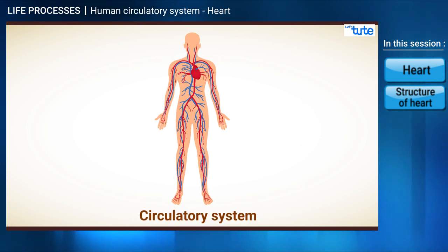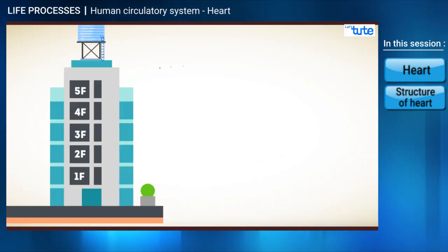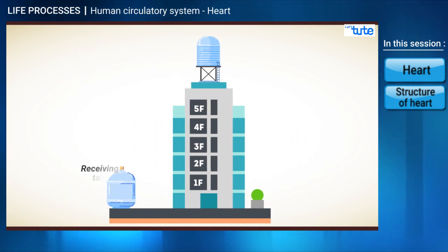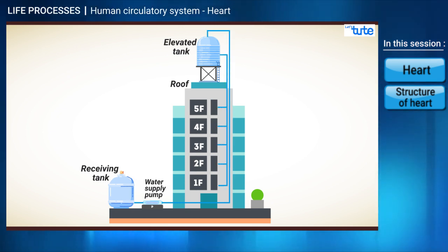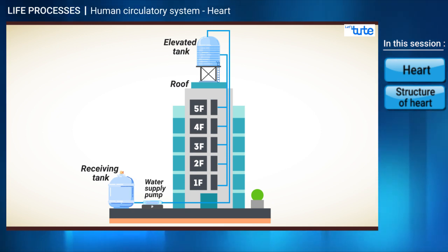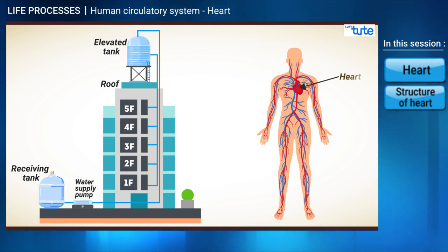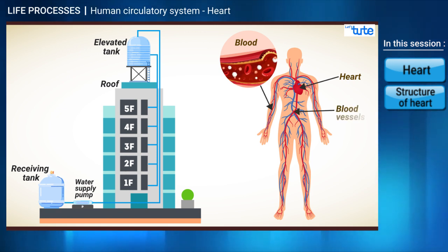The circulatory system — let's explore the same in this session. Do you know how the water reaches the taps in our houses? There is a motor pump that pumps up the water to reach the different floors through a network of pipes, and the water finally reaches the taps. The human circulatory system too consists of a pumping organ called the heart, the blood, and a network of tubes called the blood vessels, which carry the blood to different parts of the body.